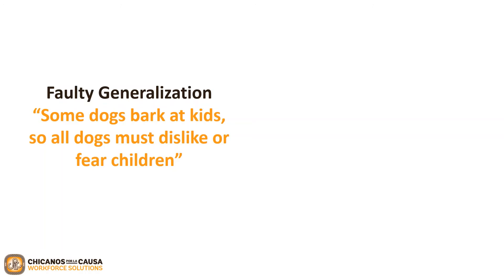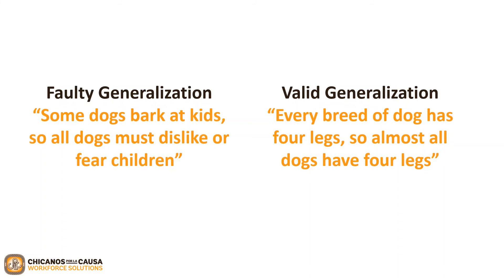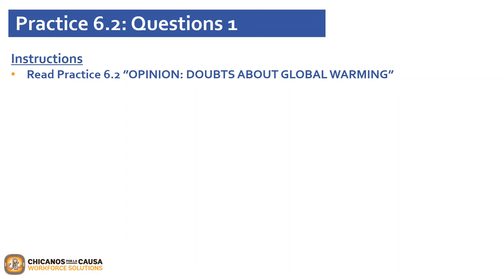Valid generalizations, on the other hand, require broad knowledge to justify them. For example: 'Every breed of dog has four legs, so almost all dogs have four legs.' Please take a moment to pause the video and read Practice 6.2 Opinion, Doubts About Global Warming, found on page 73. When you are ready to continue, go ahead and click play.